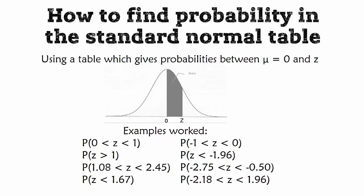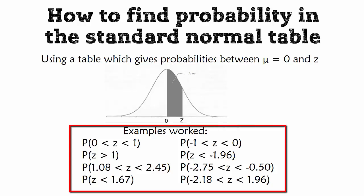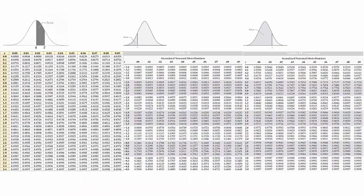In this video, we'll be looking at how to find probability using the standard normal table when you're using a standard normal table that gives probabilities between a mean of 0 and a z value, and we'll work on these eight examples.